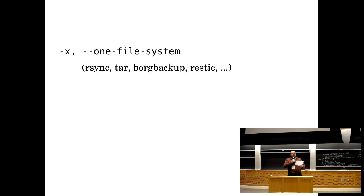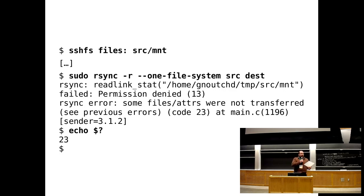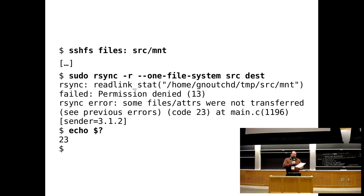It makes sense to whitelist the file systems you care about and automatically exclude the rest, which the one-filesystem option is supposed to do. Unfortunately it doesn't quite work on modern GNU/Linux systems. FUSE mounts are a problem because many are configured to deny access to root for security reasons — your backup tool running as root will get EPERM before it can detect the mount, messing up your monitoring.